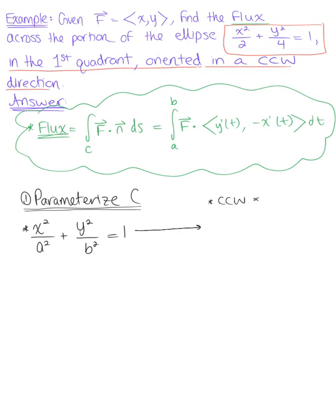in a counterclockwise direction are defined by x(t) = a·cos(t) and y(t) = b·sin(t). For a full ellipse, t ranges from 0 to 2π. Those are the general parametric equations.